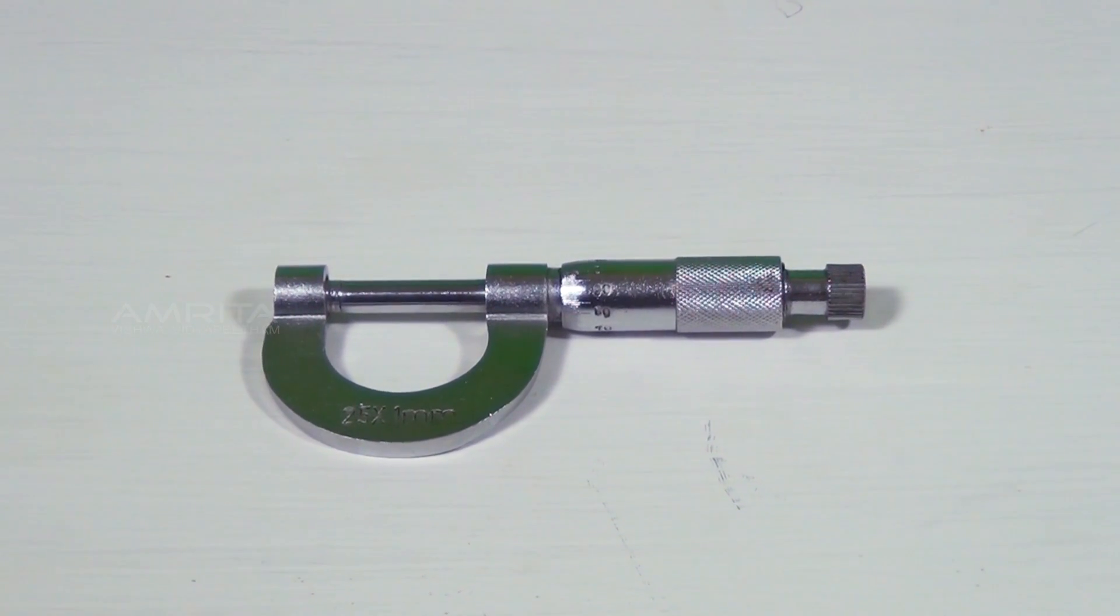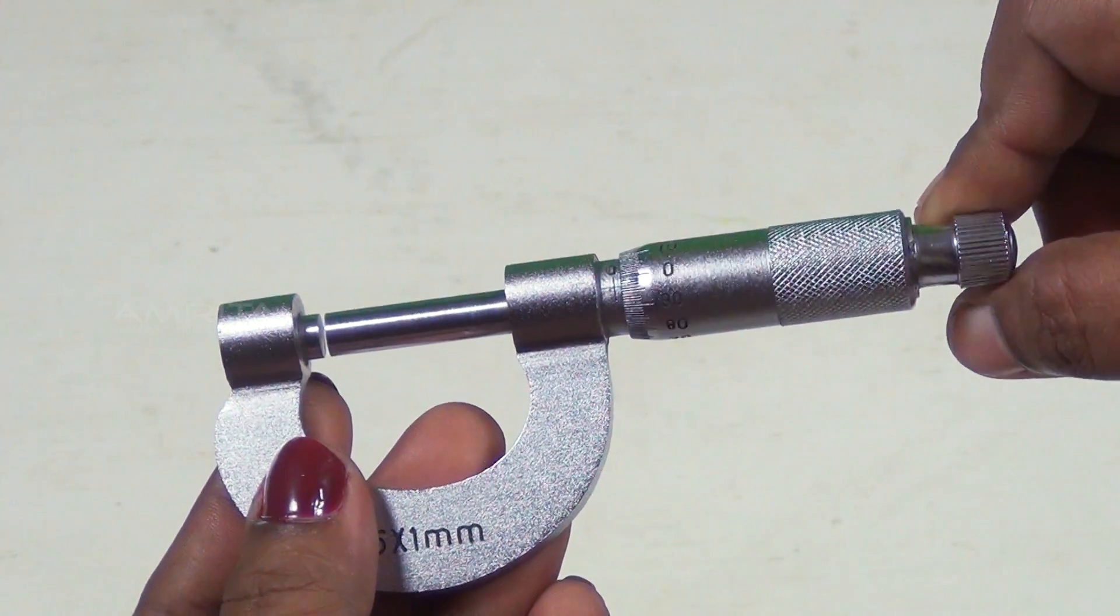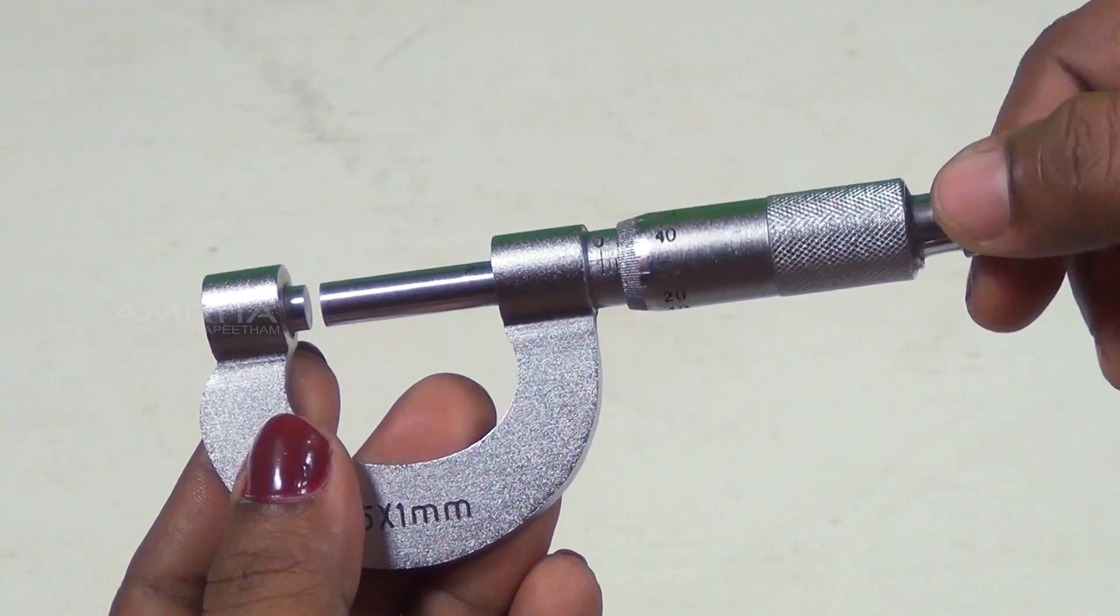Procedure. First, to determine the pitch and least count of the screw gauge, rotate the screw gauge four times and note that 4 mm has moved on the pitch scale.